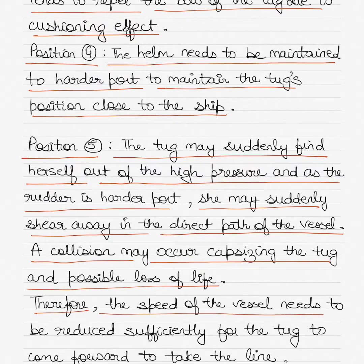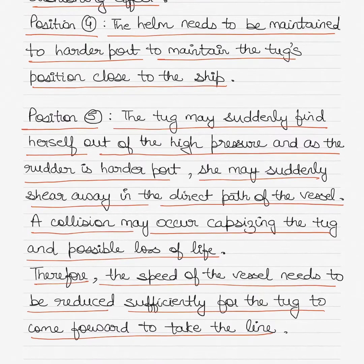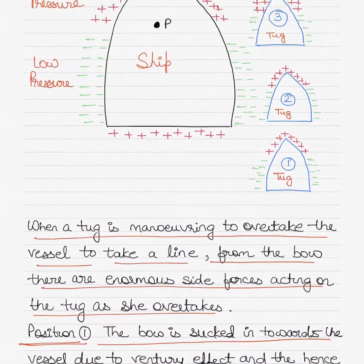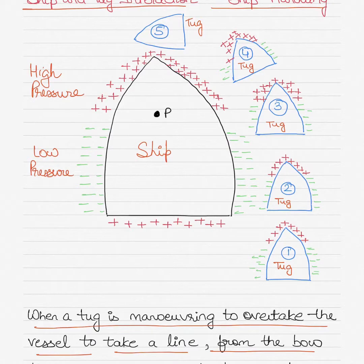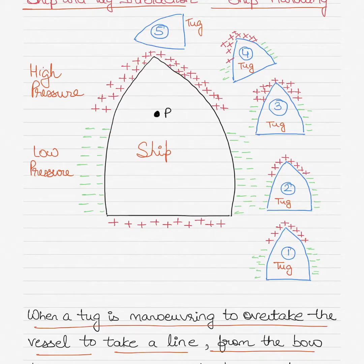Therefore, the speed of the vessel needs to be reduced sufficiently for the tug to come forward to take the line. It is essential that the ship maintains its minimum speed at which it can be steered. During such instances, normally the pilot is on board and communication between the pilot and the tug occurs continuously for safe navigation. However, it is the duty of the officers on the bridge to monitor the situation and adjust accordingly to maintain safe navigation between the ship and the tug.